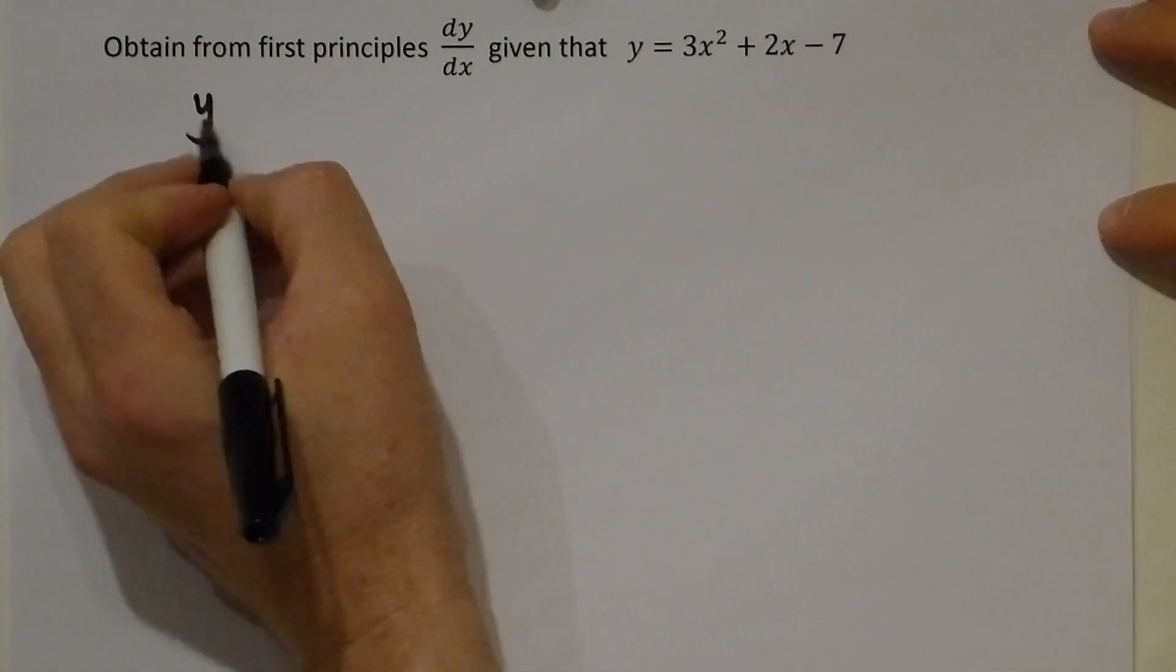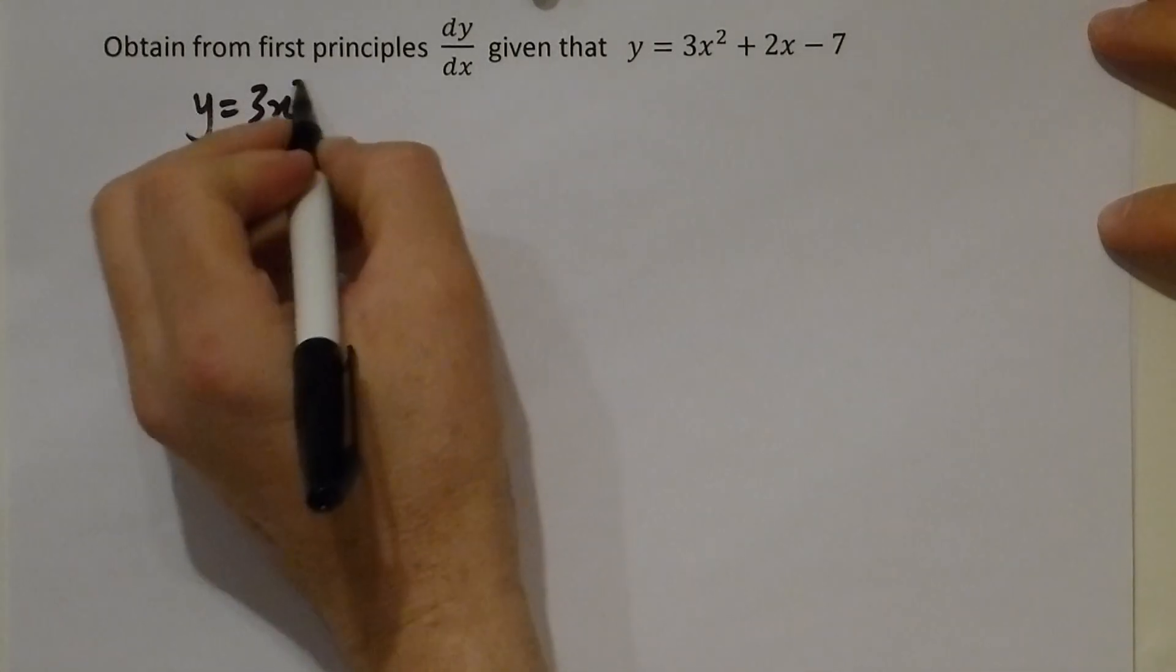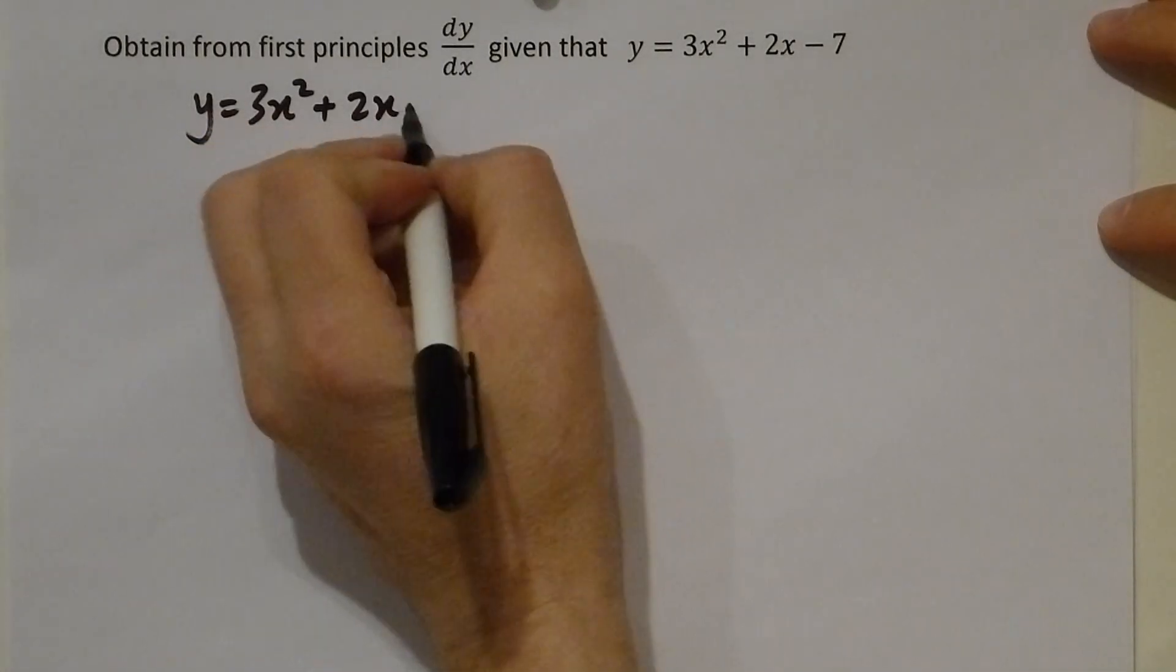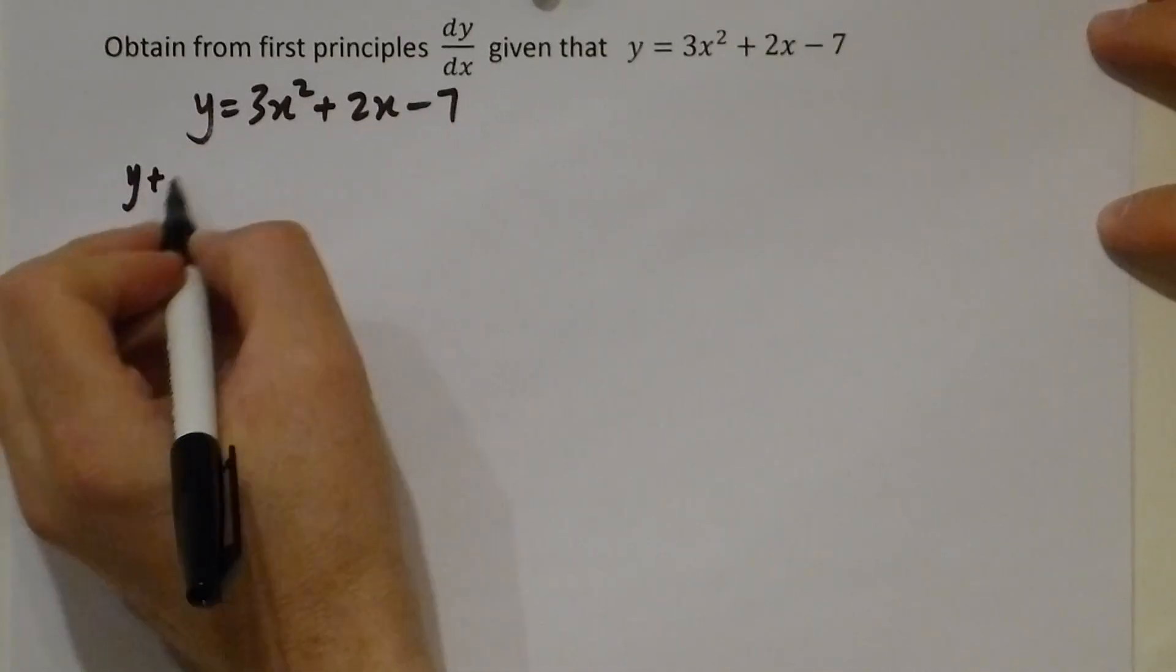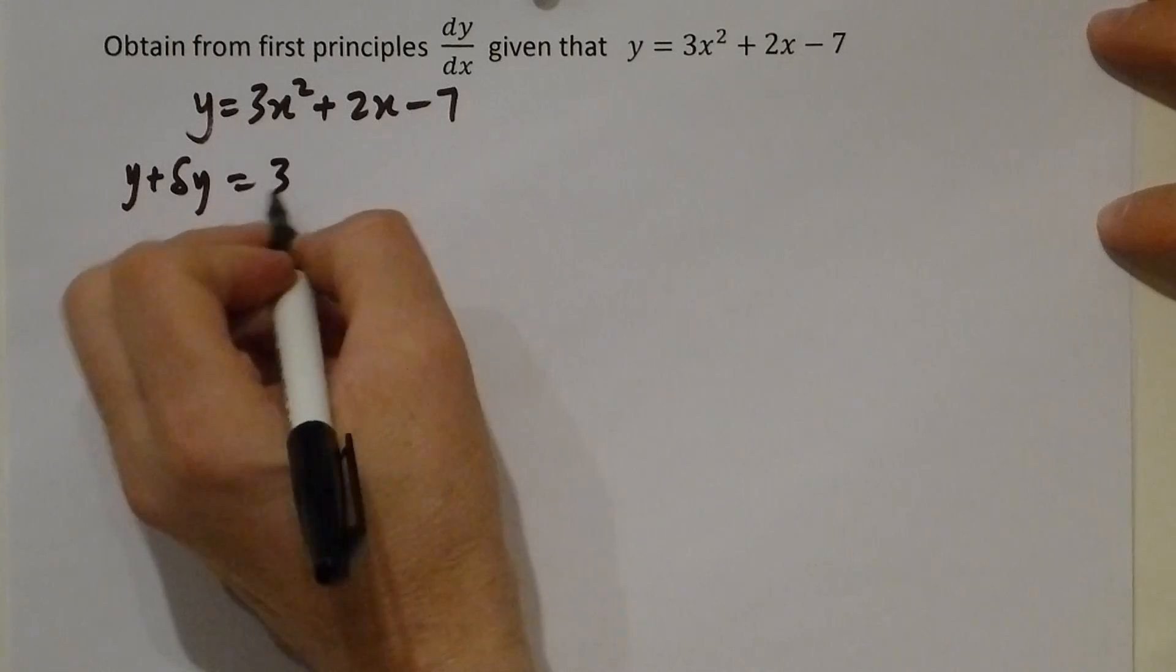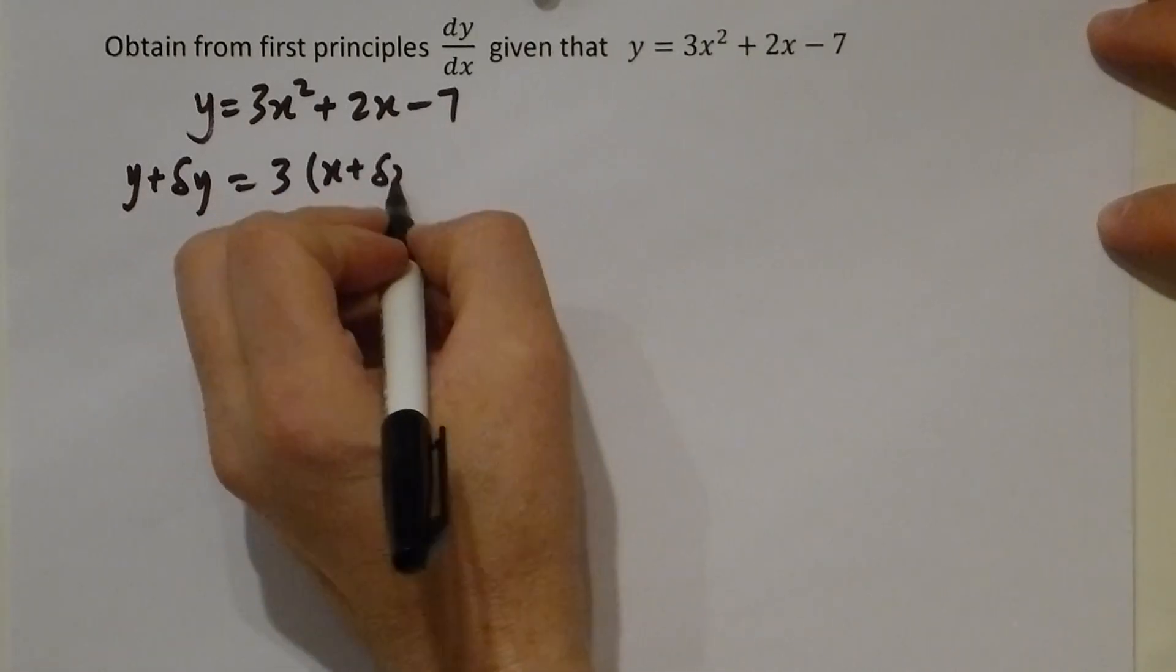To differentiate from first principles, we take the original equation and replace the y coordinate with y plus delta y, and we replace the x coordinate with x plus delta x.